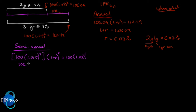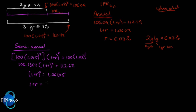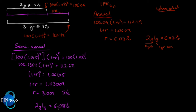We solve: $106.1364 multiplied by (1 + r) squared equals $112.62. Dividing both sides by 106.1364, we get (1 + r) squared = 1.06105. Taking the square root of both sides gives 1 + r = 1.03009, so r = 3.009% — but remember, that's for a semi-annual period. Since it's semi-annual compounding, we multiply by two: the implied 2y1y forward rate with semi-annual compounding is 6.018 percent, down from 6.03 percent under annual compounding.